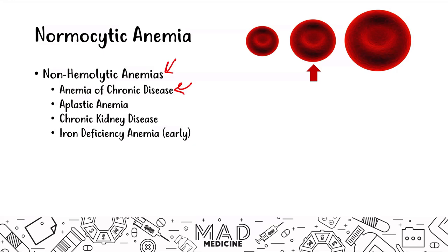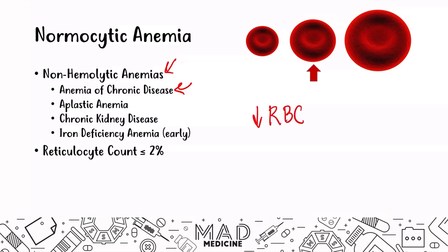In non-hemolytic anemias, your reticulocyte count is going to be less than or equal to 2%. In these anemias, you are going to have a decrease in red blood cell production. Your bone marrow is not producing a lot of red blood cells, so you are not producing many reticulocytes going into circulation. Therefore, your reticulocyte count is going to be less than 2%, which is normal.